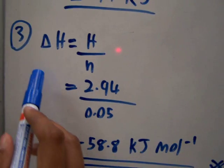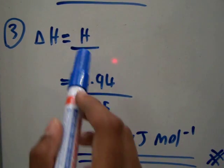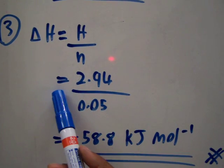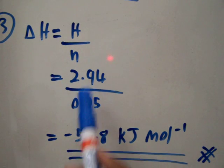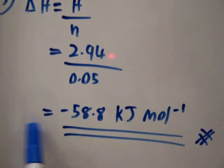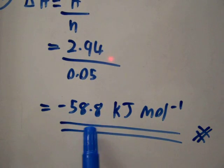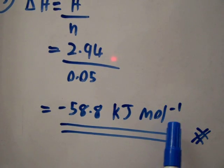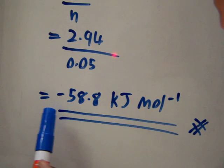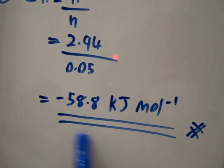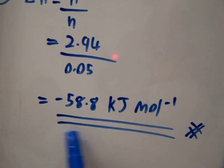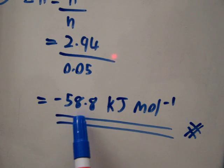The third step: the heat of neutralization is equal to H over n. The H is 2.94 and the n equals 0.05. The answer is negative 58.8 kJ mol⁻¹. The reason for the negative is because this heat of neutralization releases energy.